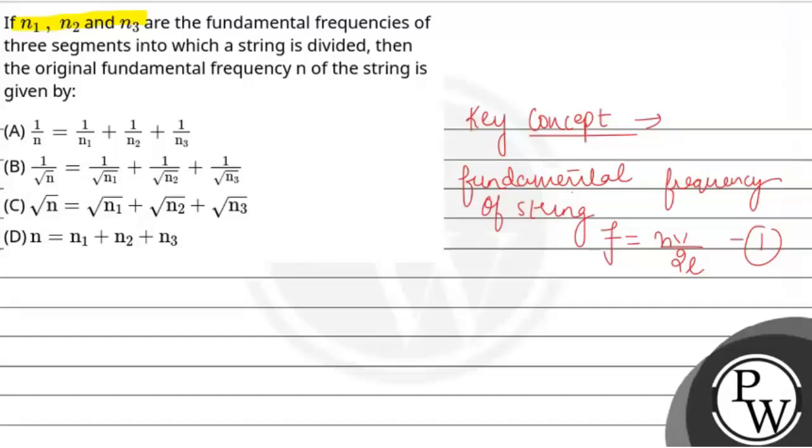Now in this question you are given that n1, n2, and n3 are fundamental frequencies, and a string is divided into three parts. For example, this. So this is divided into three parts, and n1, n2, and n3 are the fundamental frequencies. Let us suppose this length is l1, this length is l2, and this length is l3.